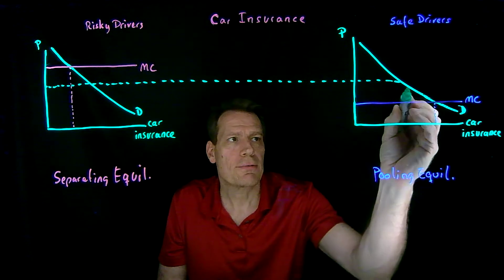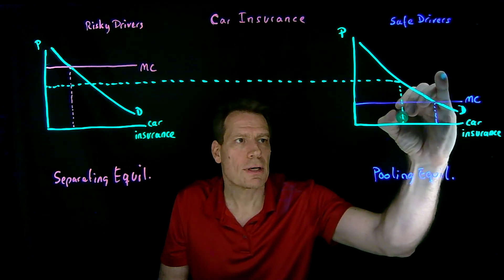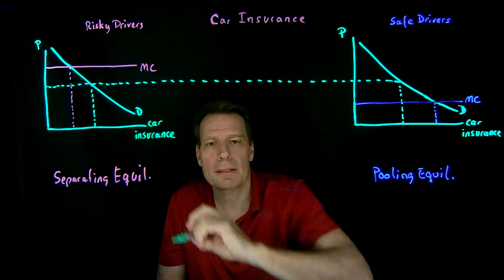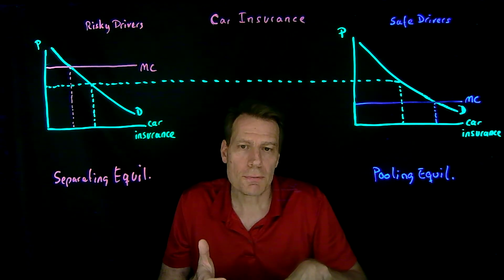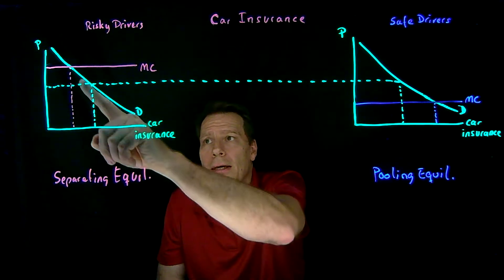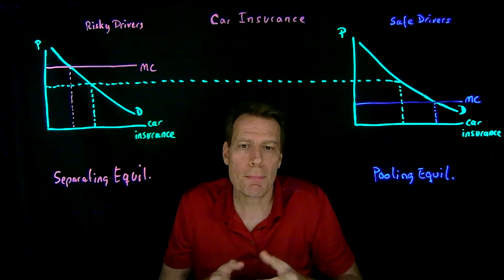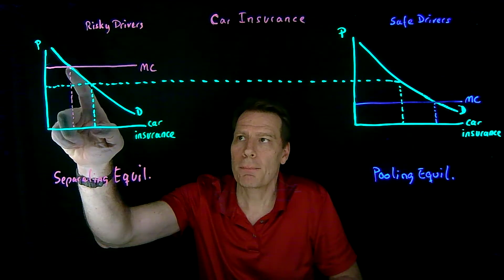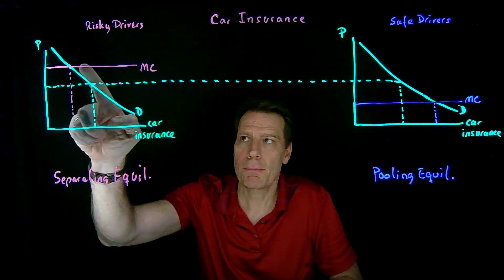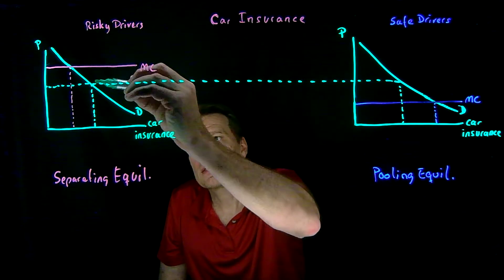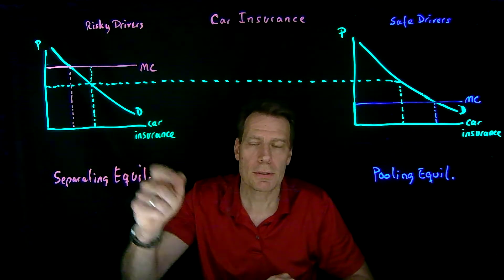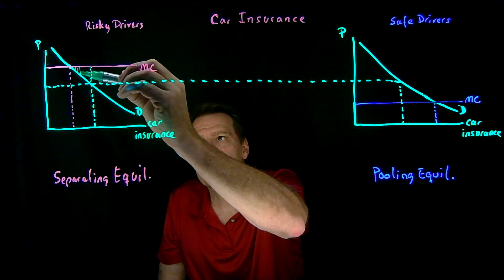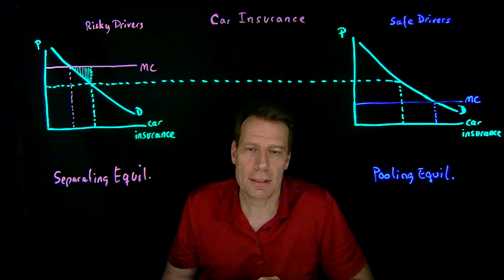This means safe drivers are now going to buy less generous insurance than they did before, and risky drivers are going to buy more generous insurance than they did before. That's going to be the source of the deadweight loss. Looking at the demand curve — which we can treat as a marginal benefit curve — for these additional levels of car insurance the risky drivers purchase, the marginal cost is greater than the marginal benefit. So there's a deadweight loss from every one of these policies that gets sold.